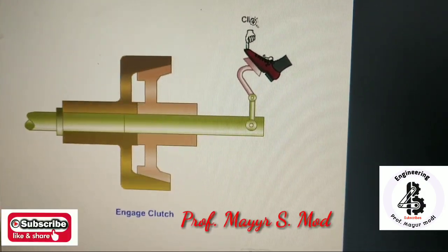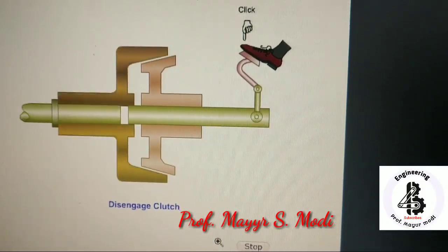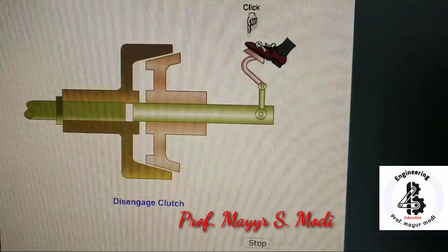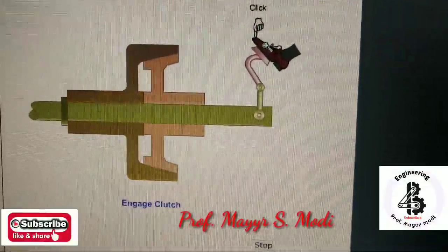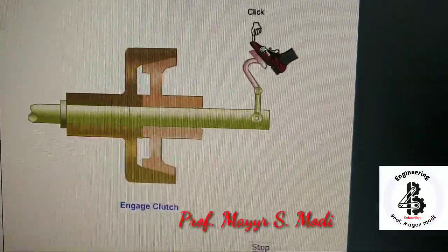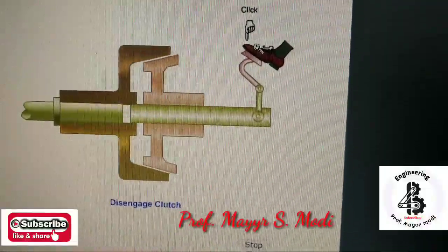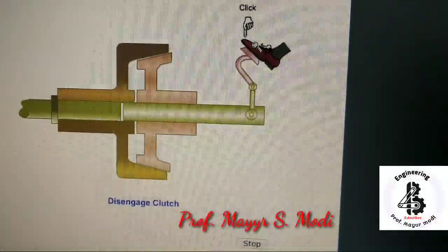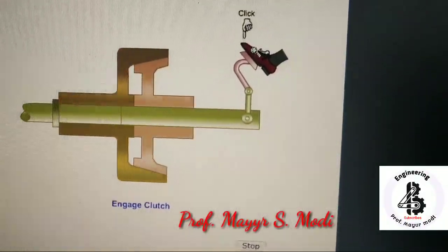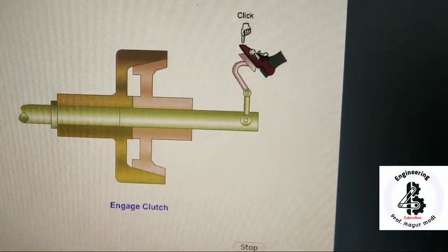The animated view shows the engaged position of a cone clutch. By application of a foot lever, the clutch easily engages and disengages, transmitting motion and power from the driver shaft to the driven shaft. You can observe the engagement and disengagement positions of the cone clutch in the animation.